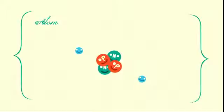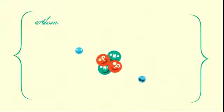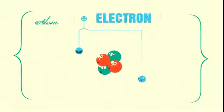Every atom has a core which is made up of at least one positively charged particle called a proton, and in most cases, some number of neutral particles called neutrons. That core is surrounded by negatively charged particles called electrons.